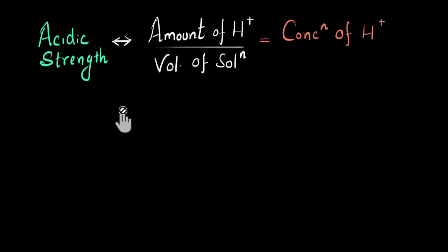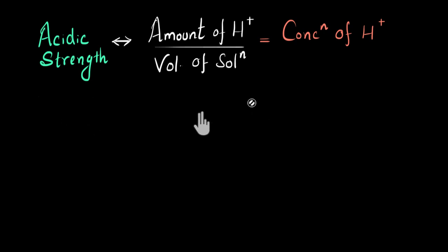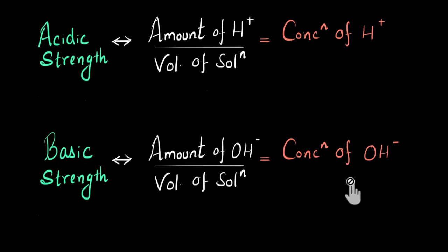Let's summarize. The acidic strength of a solution depends not only on the amount of H+ ions, but also on the volume of the solution — meaning it depends on the concentration of H+ ions. Higher concentration of H+ ions means more acidic; lower concentration means less acidic. Similarly, the basic strength of a solution depends on the concentration of OH⁻ ions — more OH⁻ concentration means more basic, less OH⁻ concentration means less basic.